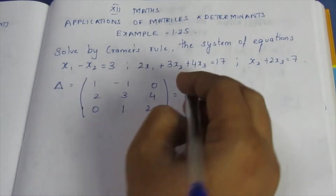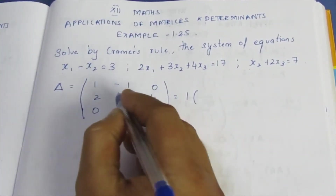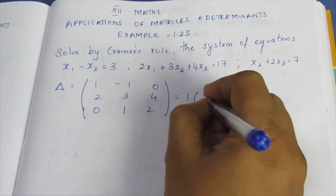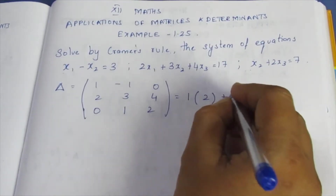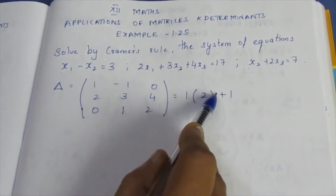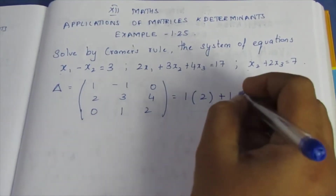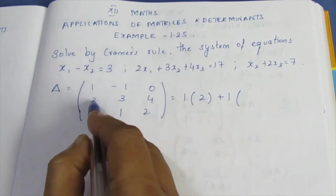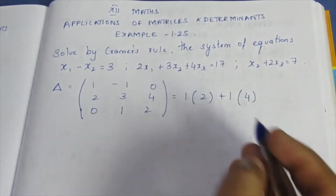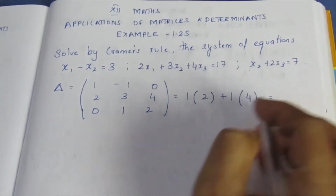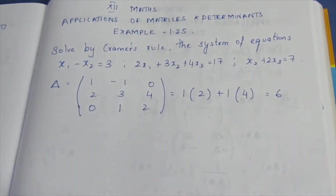The determinant value is 1. That row and column cross-multiply: 3 times 2 is 6, minus 4 gives 2. Next, minus of minus 1 becomes plus. We find: 2 times 2 is 4. This is 0, so 2 plus 4 is 6. So the determinant D is found to equal 6.